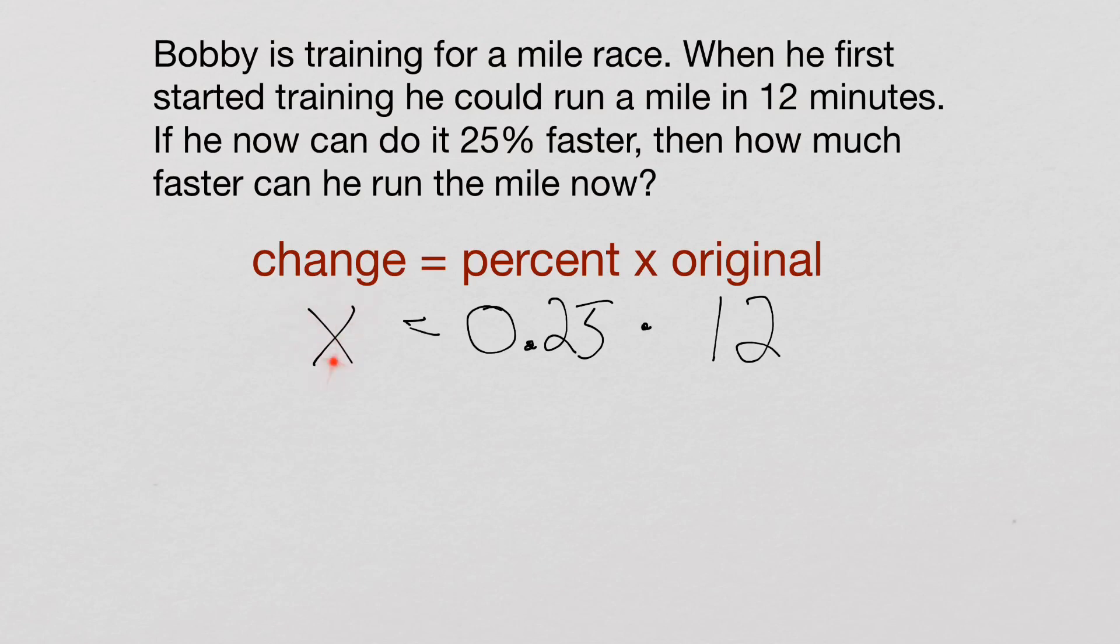Now notice, already isolated. This variable is already by itself. So all I have to do is solve this. So all I have to do is 0.25 times 12, which is 4. So he can now run it 4 minutes faster. It doesn't mean he can run it in 4 minutes. It means he can run it 4 minutes faster, which means he can actually run it in 8 minutes now instead of 12.